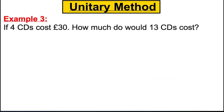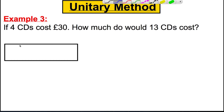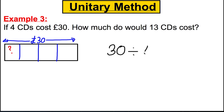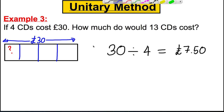One more — and then a few for you to try. Example 3: 4 CDs cost £30. How much would 13 CDs cost? Let's draw the picture: we've got 4 CDs — 1, 2, 3, 4 — and in total those 4 CDs cost £30. We use our calculator, sharing 30 divided into 4, and we get 7.5 — that means £7.50.